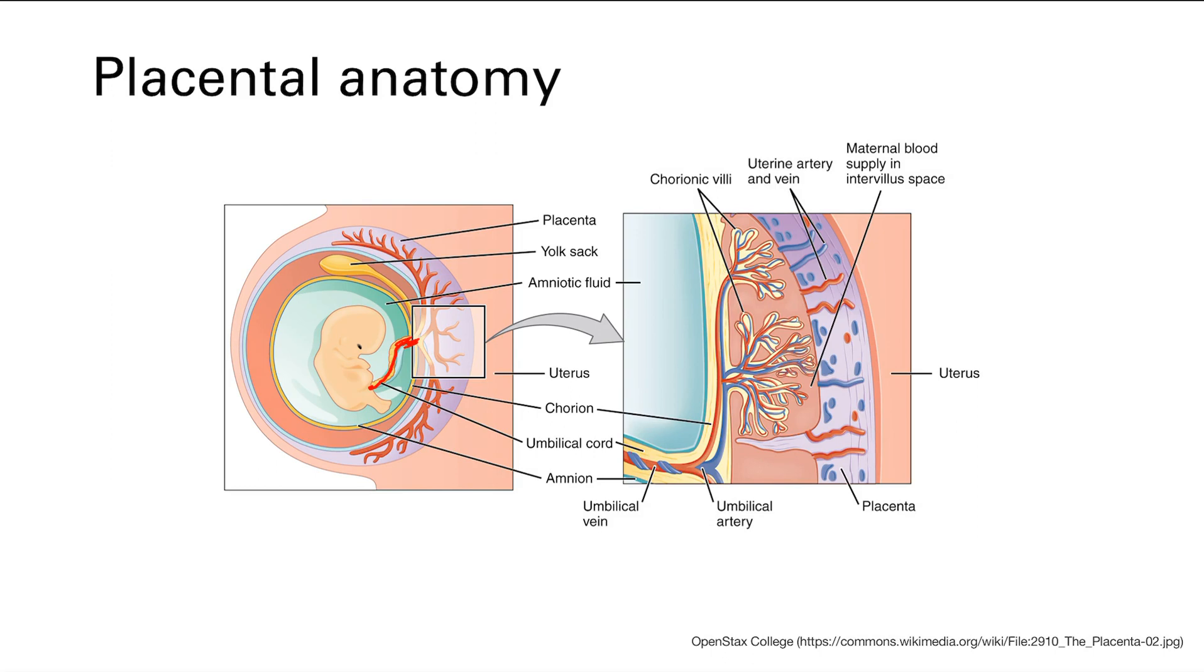If we take an even closer look, you see this umbilical cord here, and the blood vessels split up from the umbilical cord and they end out in this chorionic villi.